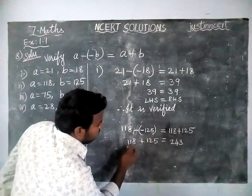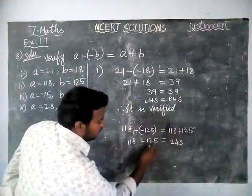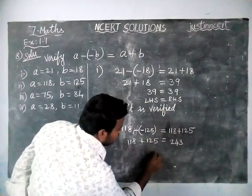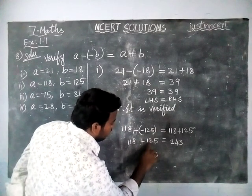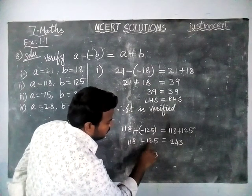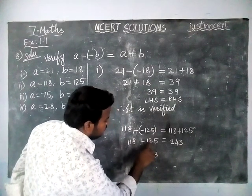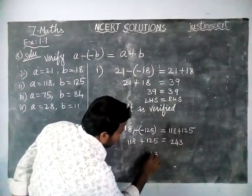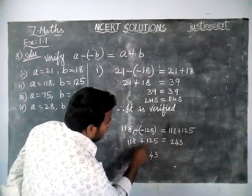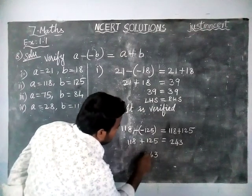Then we check the right hand side also: 8 plus 5 is equal to 13, carry 1; 2 plus 1 is equal to 3; 3 plus 1 is equal to 4; and 1 plus 1 is equal to 2. So 243 is equal to 243. Left hand side is equal to right hand side, therefore it is verified.